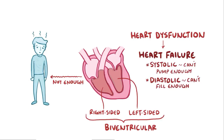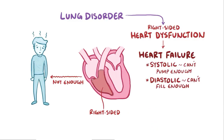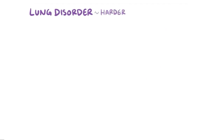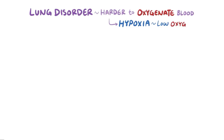Cor pulmonale is when a lung disorder causes right-sided heart dysfunction that can develop into right-sided heart failure. Lung disorders make it harder to oxygenate the blood, which can lead to hypoxia, or low oxygen levels. In response, this triggers a process called hypoxic pulmonary vasoconstriction.